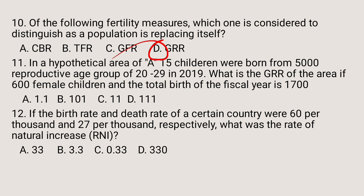Question number 11. In a hypothetical area A, 50 children were born from 5,000 reproductive age group of 20 to 29 in 2019. What is the gross reproductive rate of the area if 600 are female children and the total birth of the fiscal year is 1,700? A. 1.1. B. 101. C. 11. D. 111. The answer is A: 1.1 is the gross reproductive rate of the region.